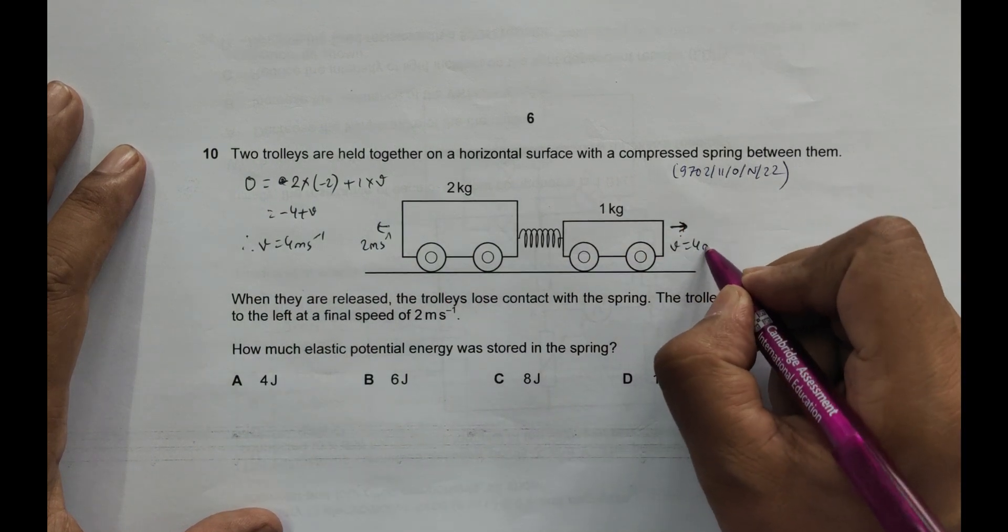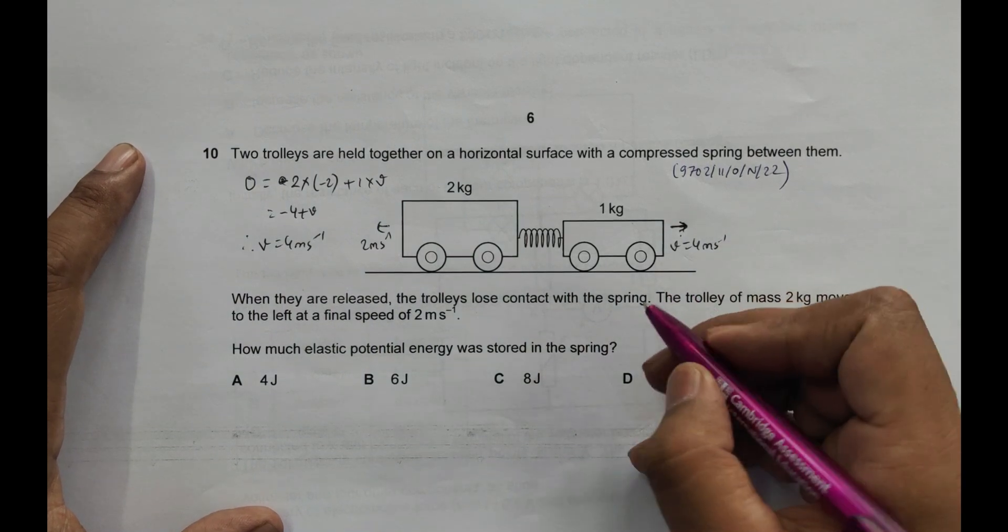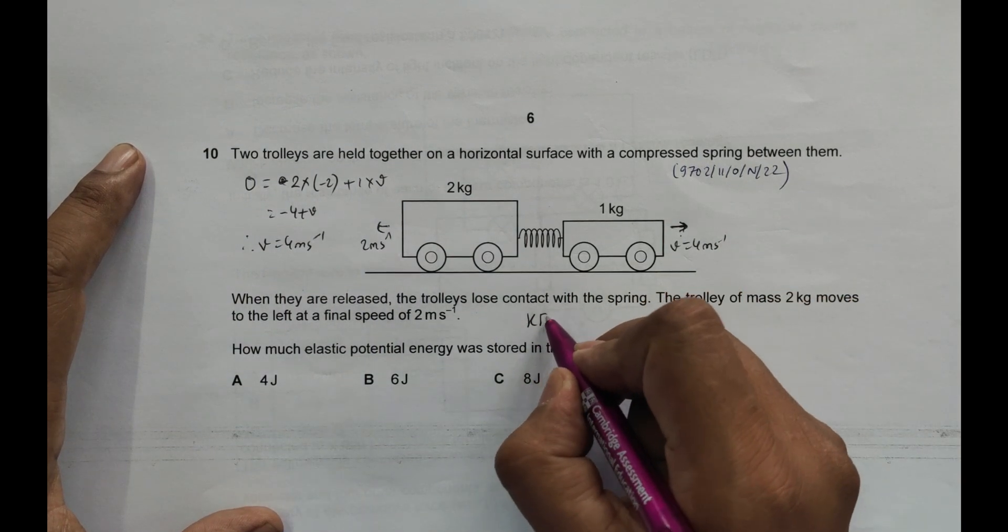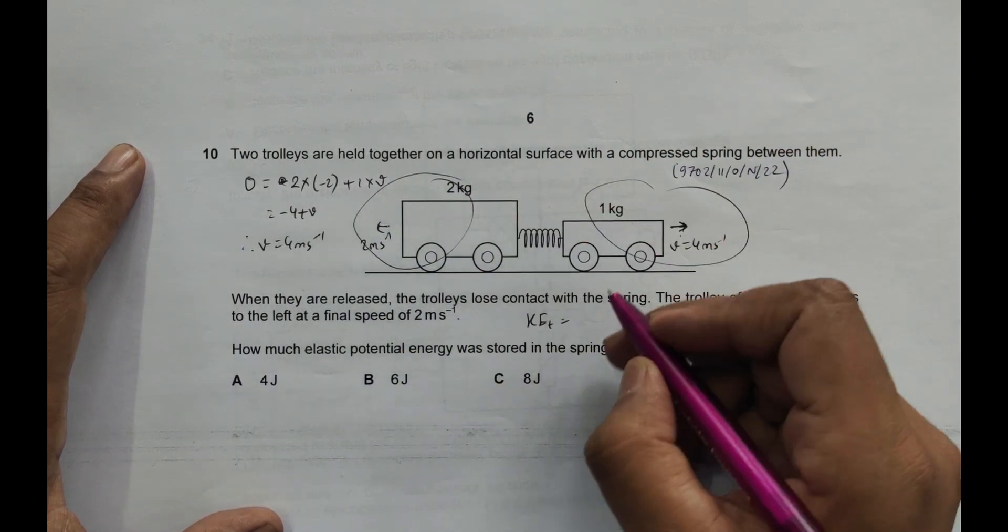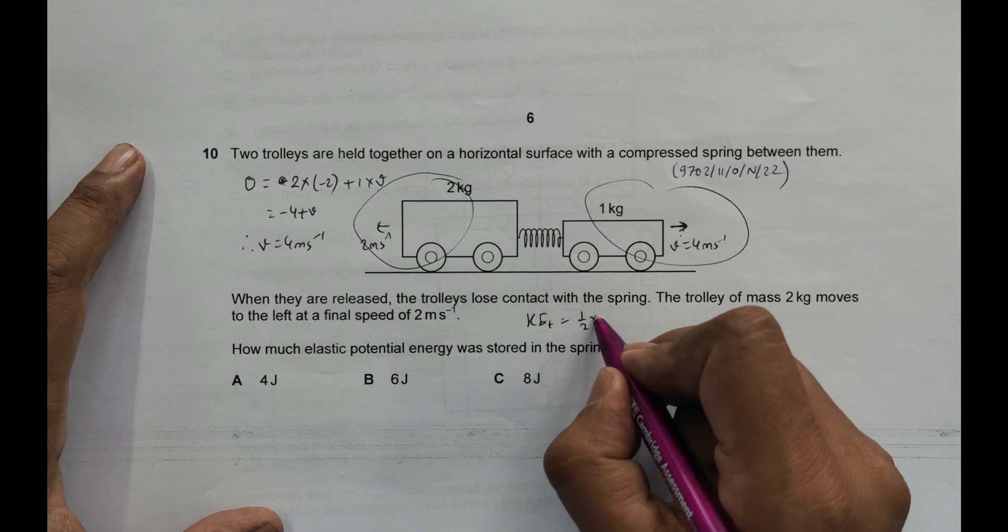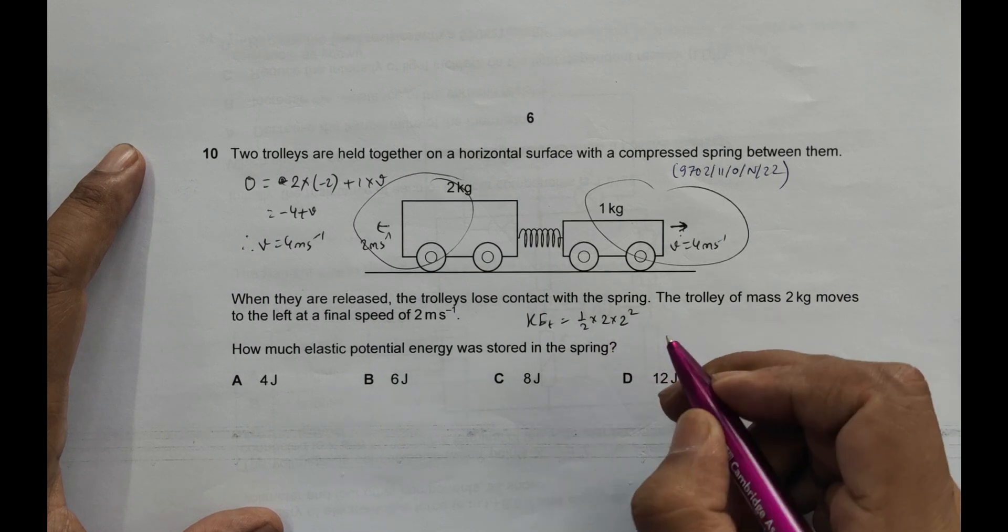Now the total KE of the system is KE total should be equal to its KE and its KE. Its KE is equal to 1/2 into mass into velocity squared.